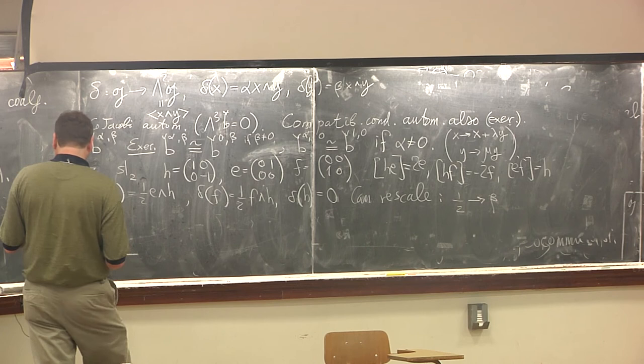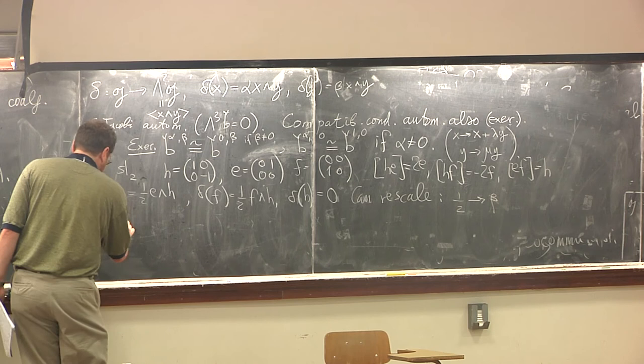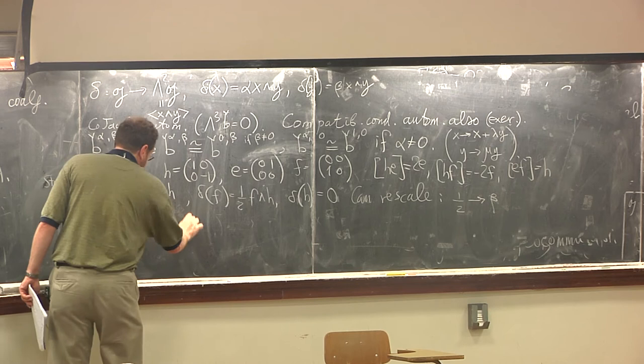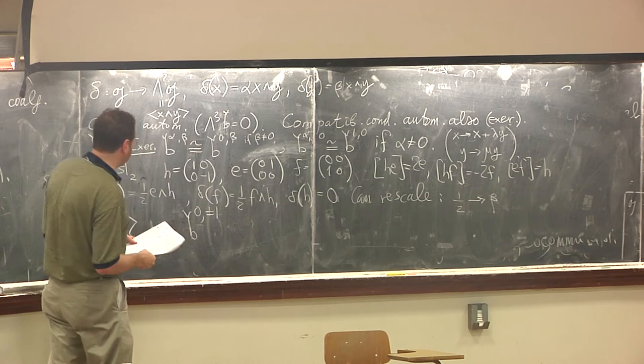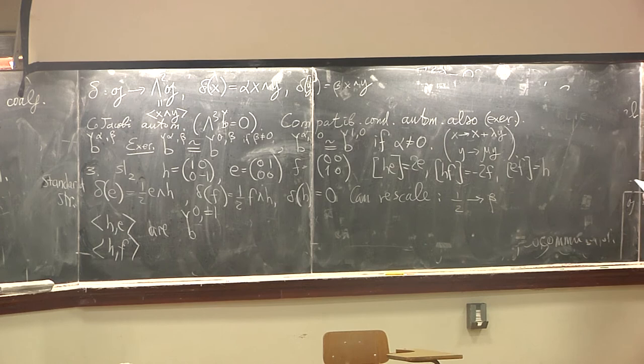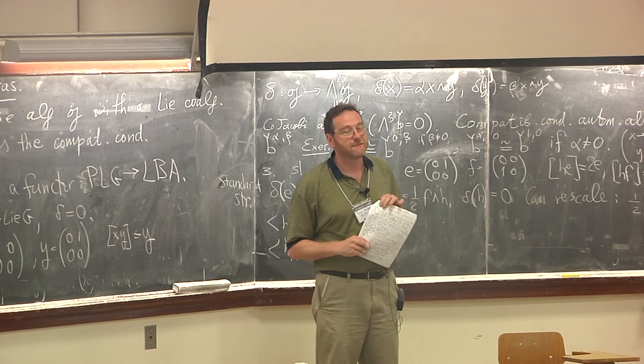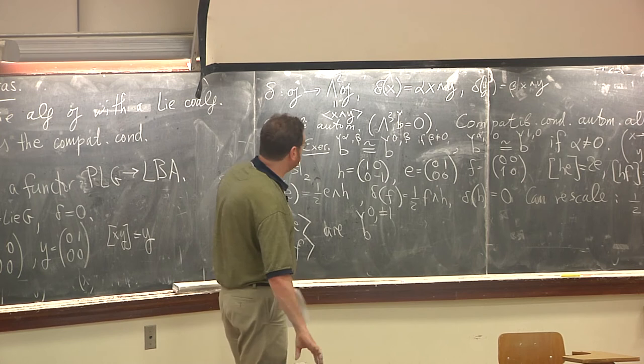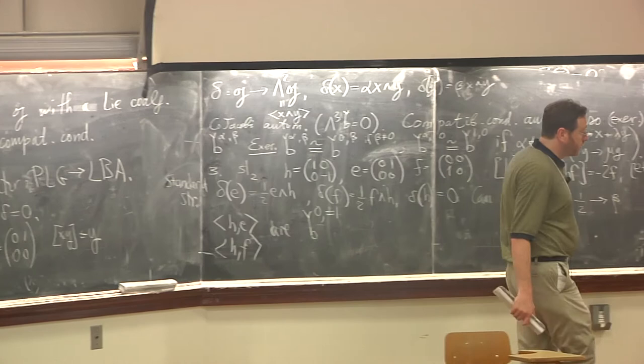The third example is the Lie bi-algebra sl₂. It has basis H = (1,0;0,-1), E = (0,1;0,0), F = (0,0;1,0) with standard commutation relations [H,E] = 2E, [H,F] = -2F, [E,F] = H. The co-bracket — called the standard structure — is: δ(E) = ½ E∧H, δ(F) = ½ F∧H, δ(H) = 0. This is the structure obtained from quantum SL₂ by taking the classical limit, so it is the most important one. It can be rescaled to give a one-parameter family of non-equivalent structures. Note that the sub-algebra generated by H and E (or H and F) is isomorphic to the two-dimensional family from before.